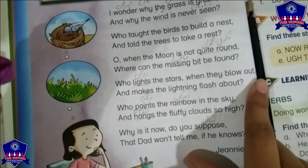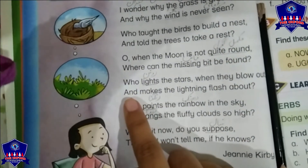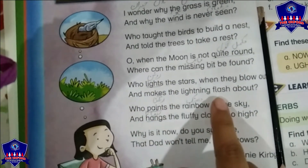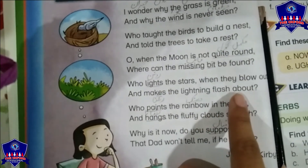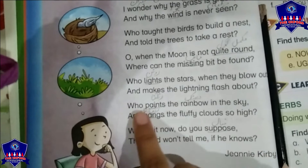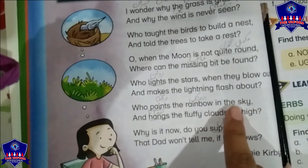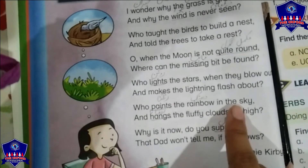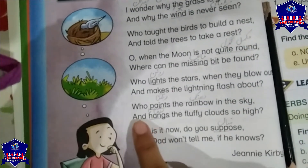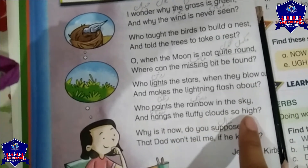'Who lights the stars when they blow out, and makes the lightning flash about?' جب ستارے بجھ جاتے ہیں تو انہیں کون روشن کرتا ہے — who lights the stars when they blow out. اور آسمانی بجلی کون بناتا ہے — and makes the lightning flash about. 'Who paints the rainbow in the sky?' آسمان پر قوس قزح کون بناتا ہے۔ 'And hangs the fluffy clouds so high?' اور ملائم بادل کون لٹکاتا ہے۔